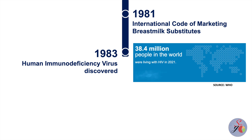In 1983, the human immunodeficiency virus which causes AIDS was discovered. Four years later, in 1987, the first antiretroviral medication to control HIV infection and prevent it from progressing to AIDS was licensed. This prompted a shift in WHO's priorities as it became clear that HIV-AIDS was a major global health threat.